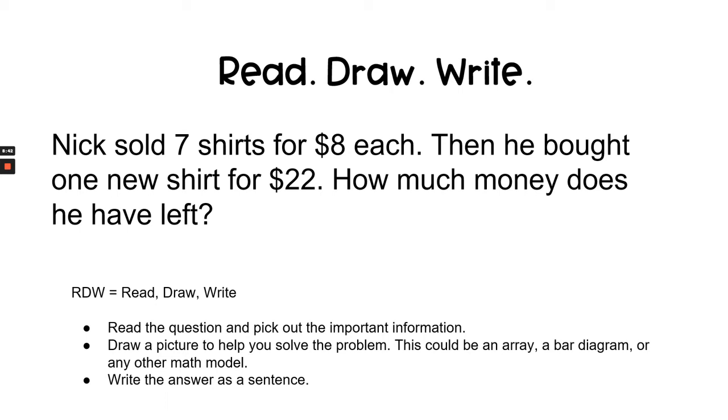Let's use this strategy to solve the read-draw-write question below. We're going to read the question and pick out the most important information. We'll draw a picture to help solve the problem. This could be an array, a bar or tape diagram, or any other math model. You want to use the math model that is suggested in the question if there is a suggestion. Otherwise, you do what you feel is best. Finally, we'll write the answer as a complete sentence and we'll explain how we reached our answer to give a little more definition to our answer to the question.